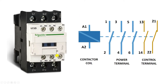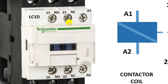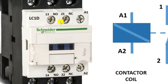Now in this contactor, you can see NO and NC contacts are given. These NO/NC contacts are used in controlling. Suppose you have a contactor and you turned on the contactor. After turning on, if you want an indication which confirms the contactor is on, then in this condition these NO/NC contacts are required. In which condition you need to use NO and in which condition you need to use NC, you will understand this later.